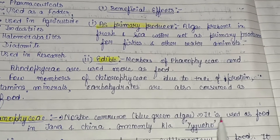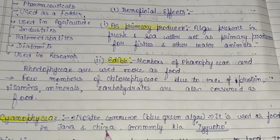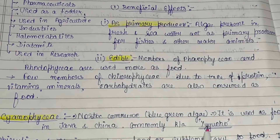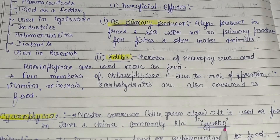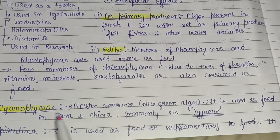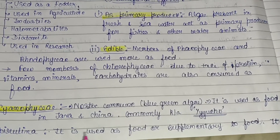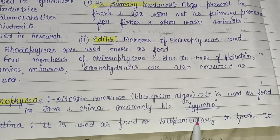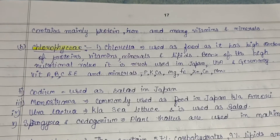In Cyanophyceae, Nostoc commune, a type of blue-green algae, is used as a food in Java and China. It is commonly known as 'yucho.' Spirulina, also in Cyanophyceae, is used as a supplementary food. It contains mainly protein, iron, and many vitamins and minerals.